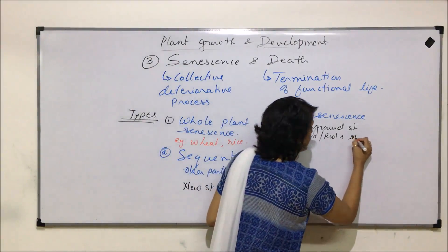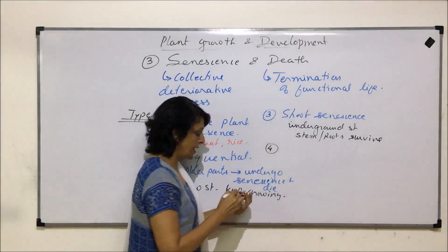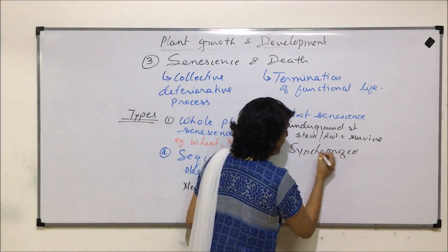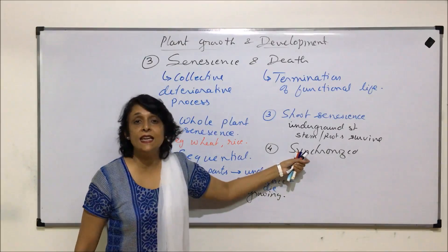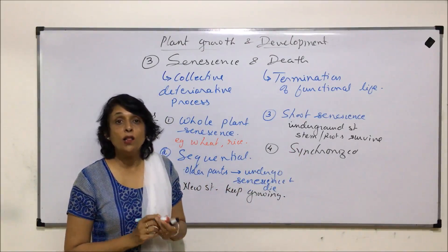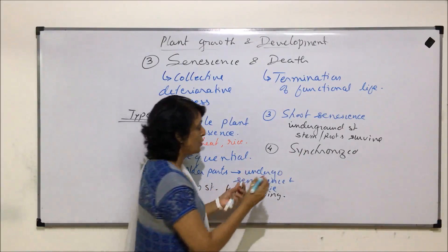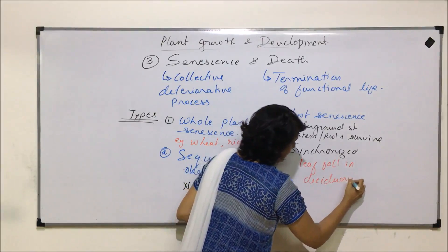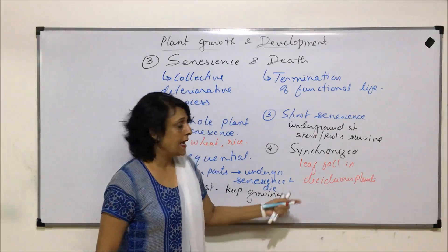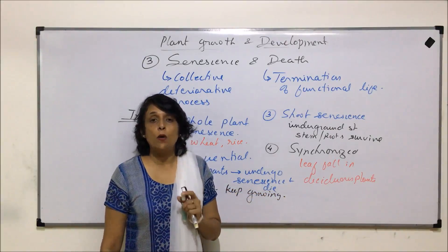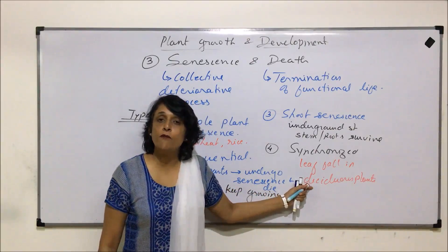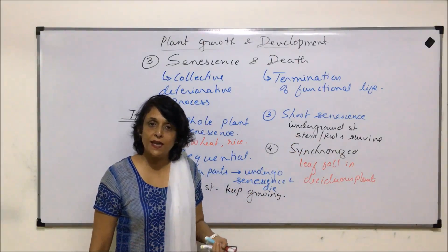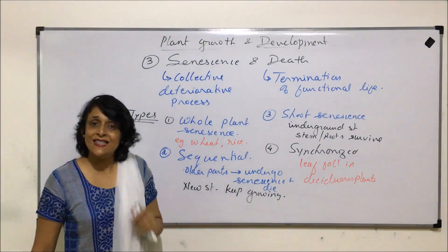The underground parts survive while only the shoot ages and dies. The fourth type of senescence is known as synchronized senescence, where everything happens at the same time. This is seen in deciduous plants, where all the leaves fall off in one period. In deciduous plants growing in colder regions, all leaves fall simultaneously to avoid damage from snow. Synchronized senescence can also be termed simultaneous senescence.